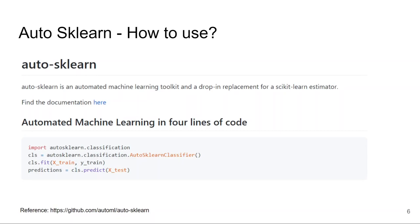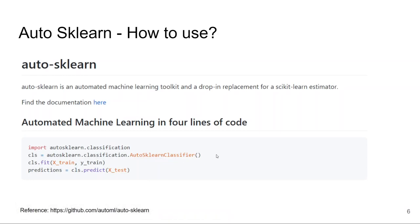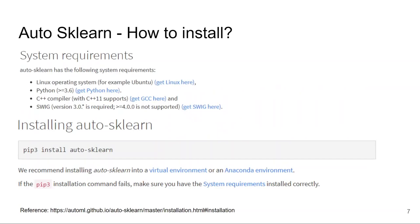You just have to replace scikit-learn estimator with Auto-sklearn classifier, that's it. Let's say if you are using logistic regression or decision tree classifier, instead of that one line, you just have to replace with this one line: auto_sklearn.classification.AutoSklearnClassifier and everything works as is.